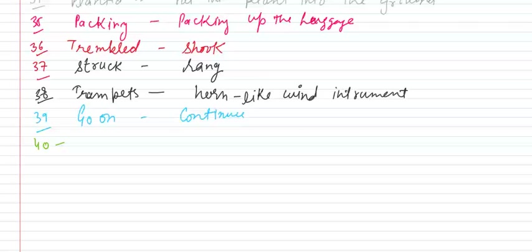Next is 40th word. 40th word is leaned. Leaned means bent, jhukha hua. L-E-A-N-E-D, leaned, bent, jhukha hua. French ka ek word hai.